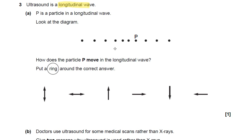In doing that, they're doing a vibration — or an oscillation, which is another word for vibration. It's a repeated movement back and forth in the same plane. How does particle P move in a longitudinal wave? Put a ring around the correct answer. Really, it's a question asking you just to define what a longitudinal wave is.